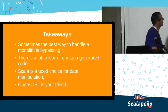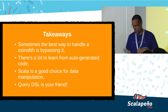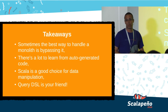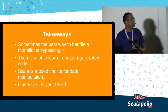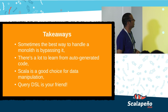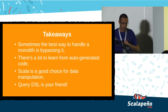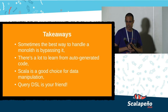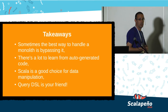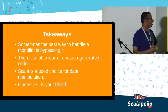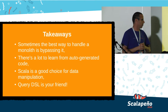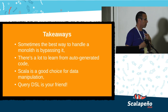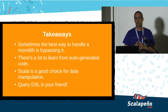So let's sum up. The main takeaways from the four months working on this project: first, sometimes the best way to handle a monolith is to bypass it — sometimes you can't break it, you just have to go around. Second, you can learn a lot from auto-generated code. Third, Scala is a good choice when you need to do data manipulation — joining data from two different sources is quite painful in Java. And query DSL is your friend: don't hesitate to invest the ramp-up time, it will make your life much easier later.